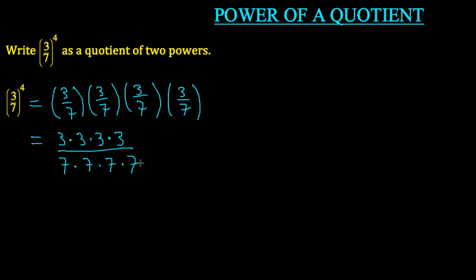So it looks like this: the 4 threes multiplied together in the numerator divided by the 4 sevens multiplied together in the denominator. If we return this to exponential form, we understand that 4 threes multiplied together is written as 3 to the exponent 4, and that's over 7 to the exponent 4.